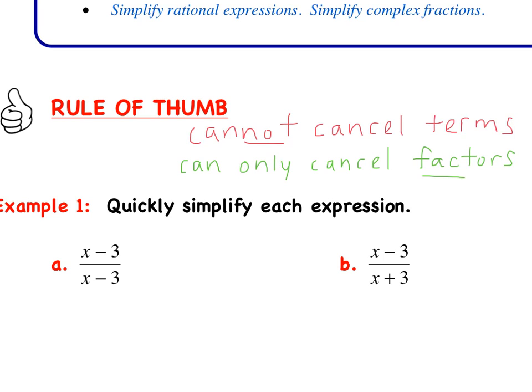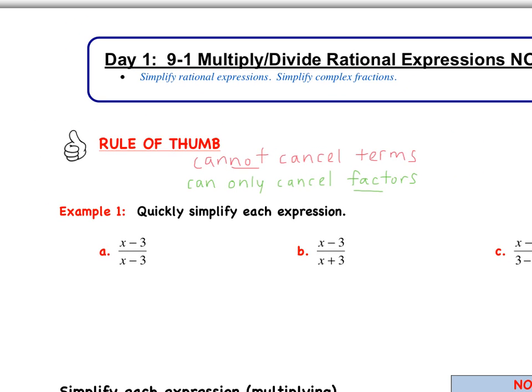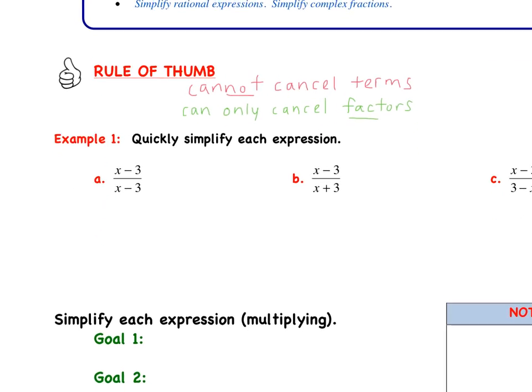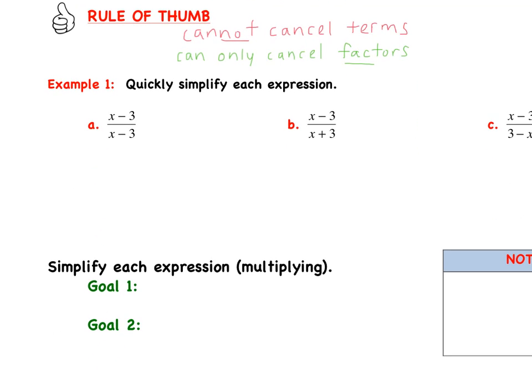You can only cancel factors. You cannot cancel terms. So looking at x minus 3 over x minus 3: x is a term, 3 is a term, and x minus 3 is a factor. Terms are held together with pluses and minuses — addition and subtraction. Factors are all of those terms together.